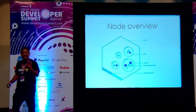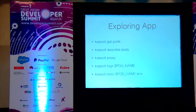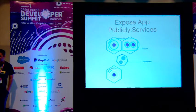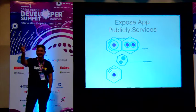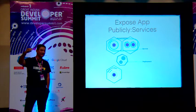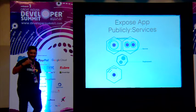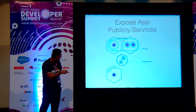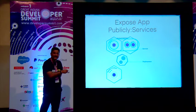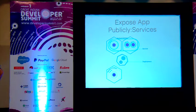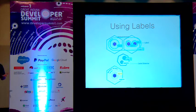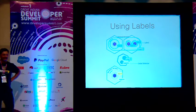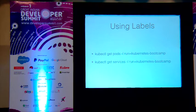An important aspect: until you expose a service, nobody can use it — unlike Java where a public method is accessible by anyone. In Kubernetes, you explicitly expose the service, and anyone calling it calls only that exposed version. You can scale the versions, deploy the application, and label applications — for example, 'Application A is here, Application B is here' — and use those labels within your application.